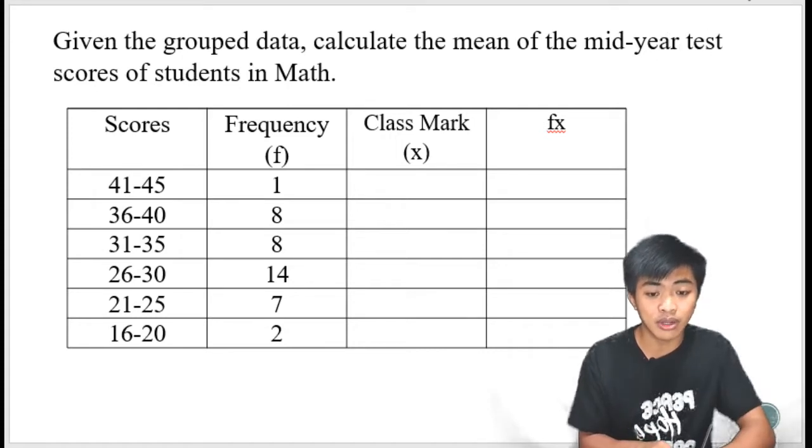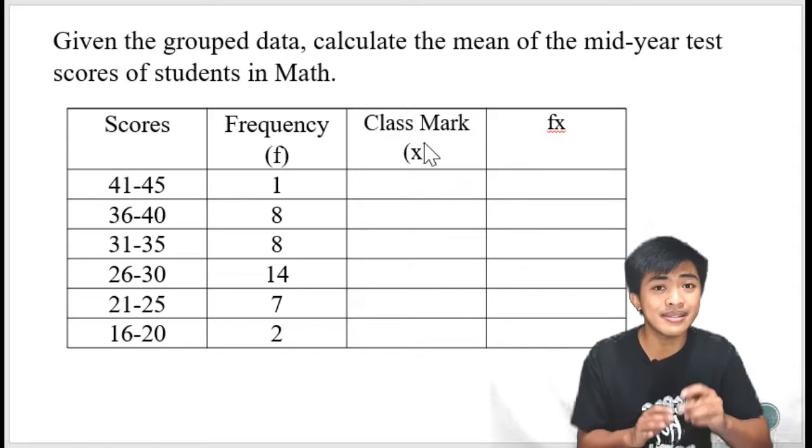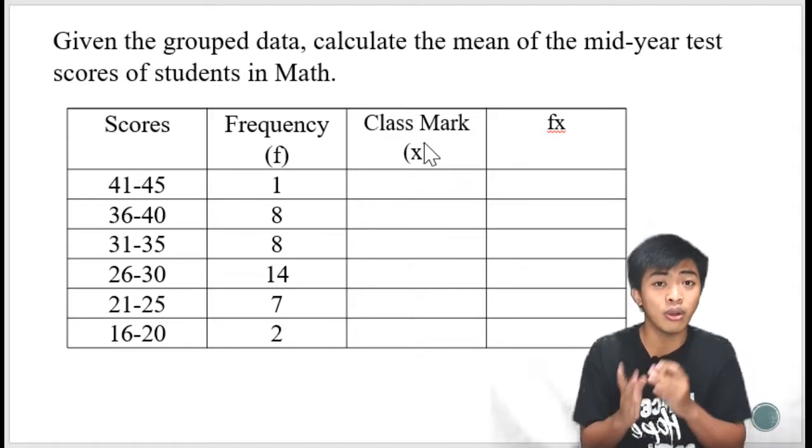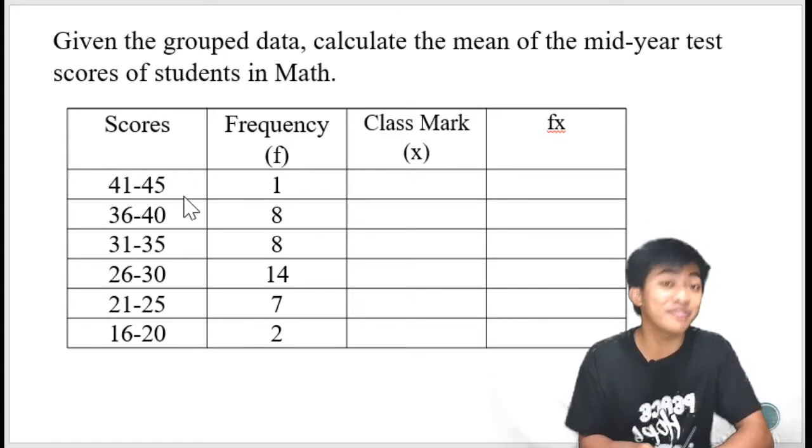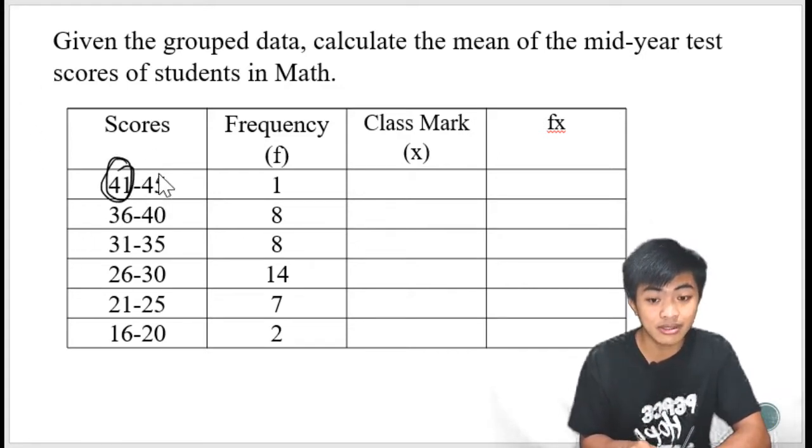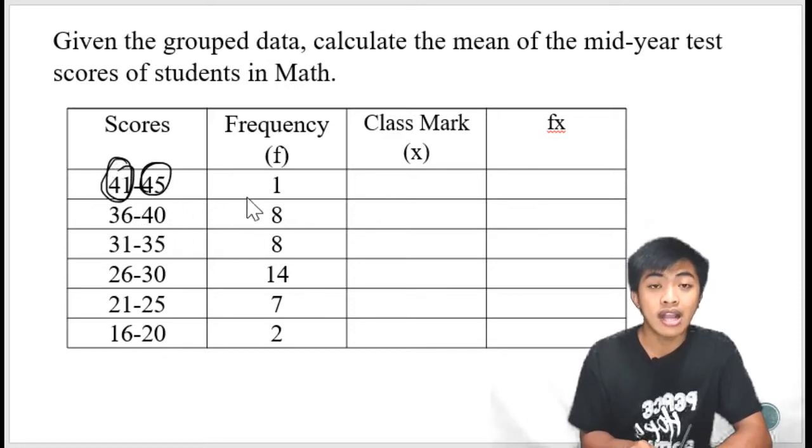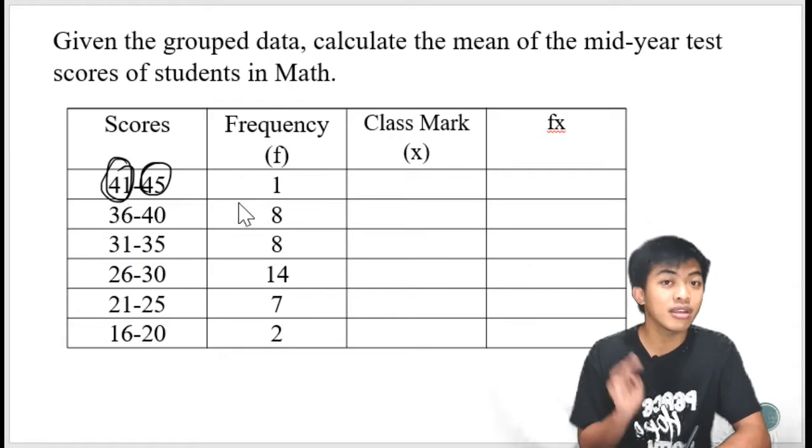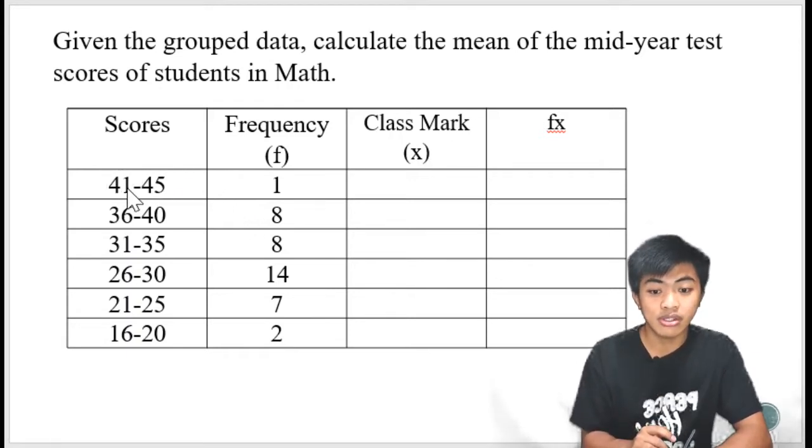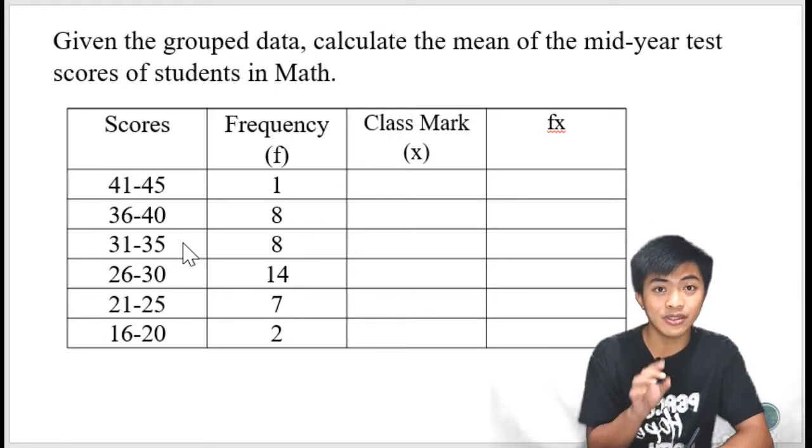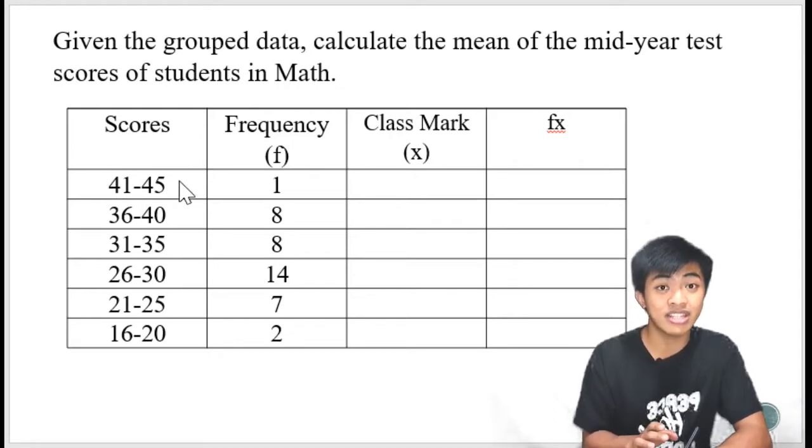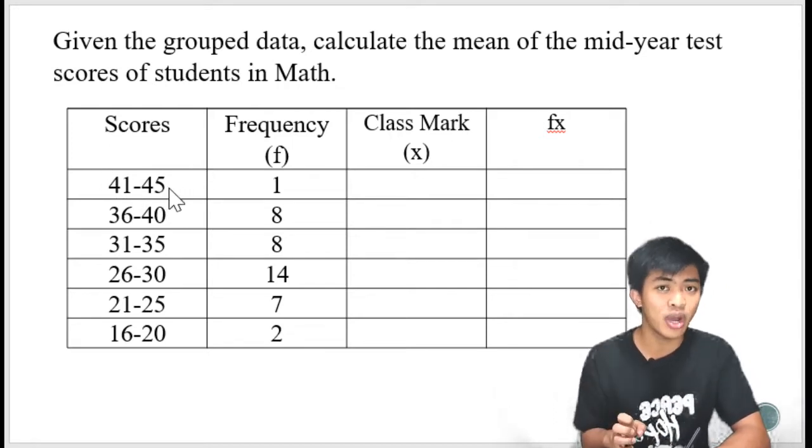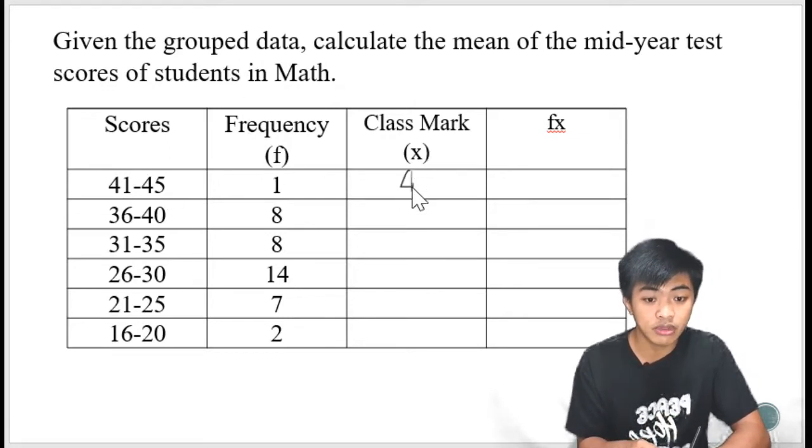So ano ang ilalagay natin sa class mark or sa x? Class mark is simply the number in between the lower limit and the upper limit. In each interval, there is a lower limit and the upper limit. So ito ang tinatawag natin lower limit. Ito naman yung upper limit. Ang class mark, that is the number in between the lower limit and the upper limit. So how do we get the class mark? This is one method. We can add the two numbers. We can add 41 and 45, then divide it by 2. So if we add 41 and 45 divided by 2, the result is actually 43.